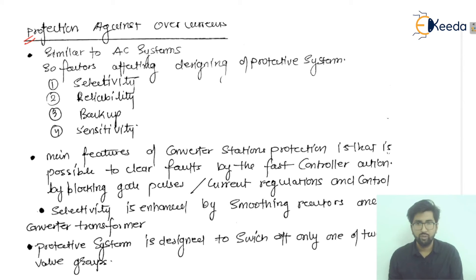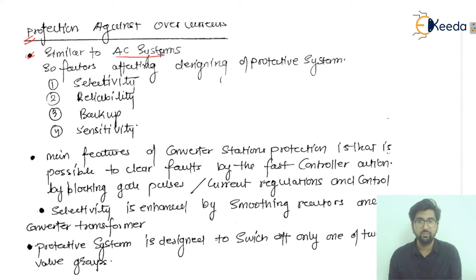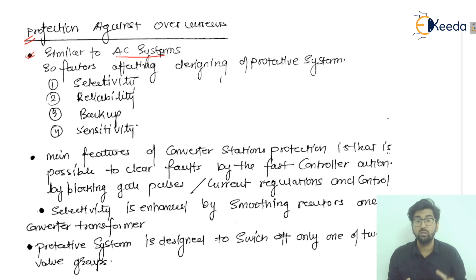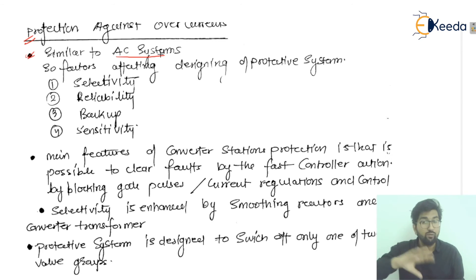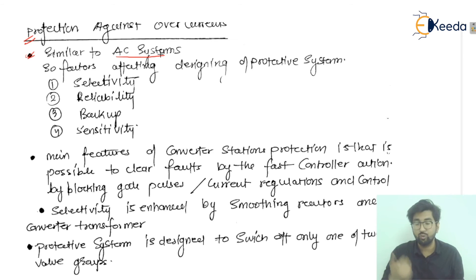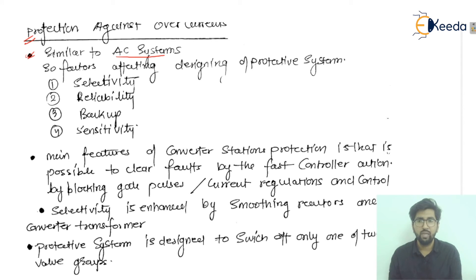So what is overcurrent? If the current crosses the permissible value, that is called overcurrent, due to some fault conditions. This is kind of similar to AC systems. The factors affecting AC systems due to overcurrents are the same ones that will be discussed here for the DC system, that is HVDC.